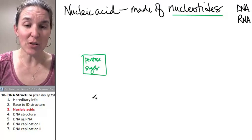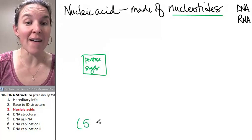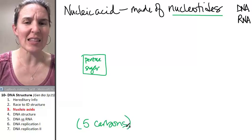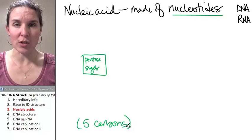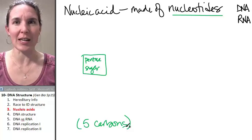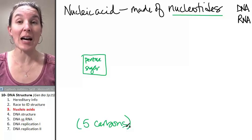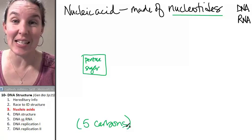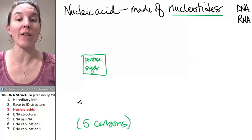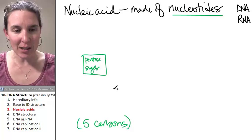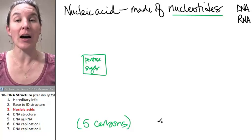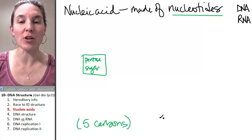A pentose sugar just means there are five carbons in the sugar. Glucose is not a pentose sugar because it's C6H12O6. So if it has six carbons, it's not a pentose sugar. I'm going to tell you a couple of examples of pentose sugars.